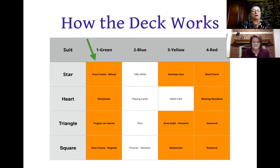The first thing we would do with our youngest children is play games using only representations in the green column. So one player might have the star suit with mixed tens frames, another might have hearts with dominoes, and another might have triangles with fingers on the hand — but everyone would have about the same chance of being able to recognize their quantity.